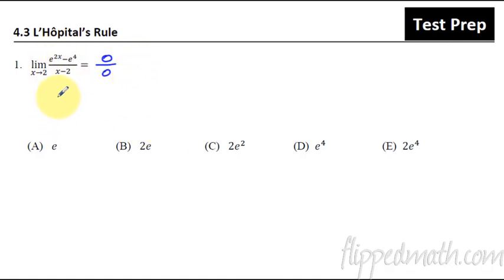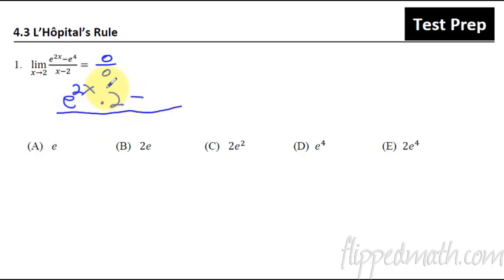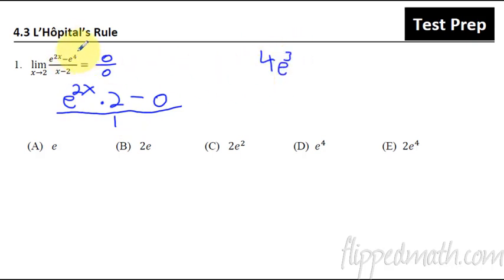Using L'Hôpital's rule, the numerator would become e to the 2x times 2. Here's where students make mistakes: the numerator term e to the fourth is a constant number, and the derivative of a constant is zero. That's usually the biggest mistake. The denominator is just going to become one. A lot of times students accidentally put 4e to the cube because they're used to the power rule. That is incorrect. Then you can simplify and plug in the 2.